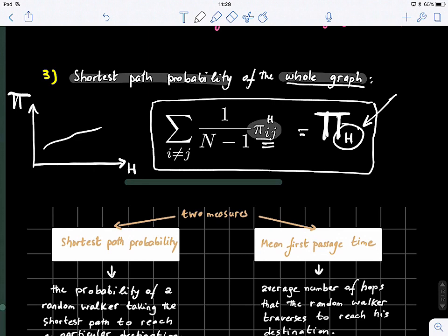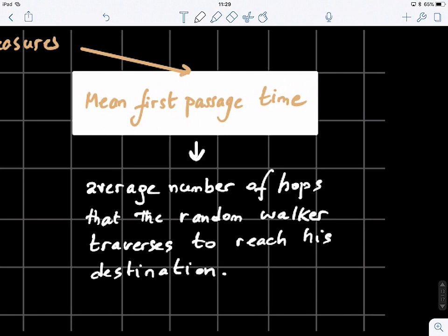But now we will look at the second measure, which is the mean first passage time. So this is the average number of hops that the random walker traverses to reach his destination.